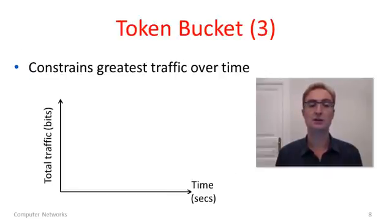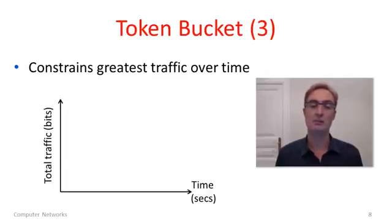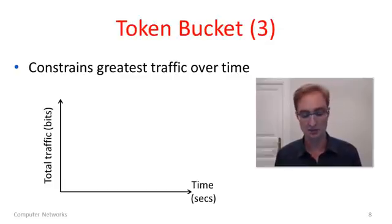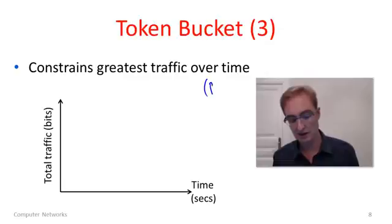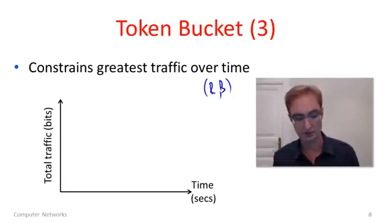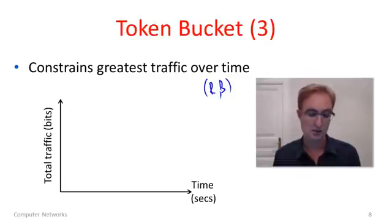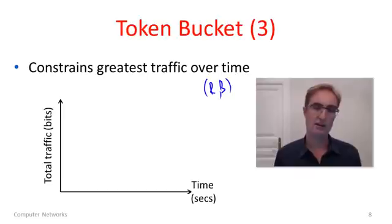Token buckets are useful because they're able to constrain the greatest or largest amount of traffic from an RB source that the network can expect over time. So let's imagine that we have traffic coming from an RB token bucket source — what kind of traffic could that impose on the network?